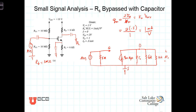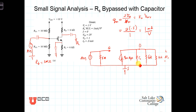We're using the hybrid-pi model, where the gate is decoupled from the drain and source, modeling the input resistance into the gate as infinite. Because the capacitor bypasses R_S, the source is shorted. I've also included R0, the Early Effect resistance, even though lambda equals 0 was assumed — just to show where it comes into play. In later examples without the bypass capacitor, we'll neglect R0 as it becomes messy.